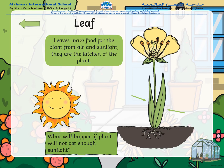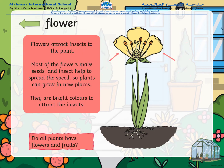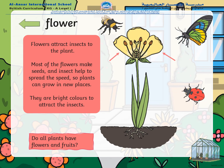First we have the leaf. A leaf is a part of a plant that makes food for all the rest of the parts of the plant, with the help of air and sunlight. The leaves act as the kitchen of the plant. What will happen if plants will not get enough sunlight? Take a moment and think about it.